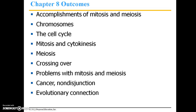What I hope to cover with this lecture includes accomplishments of mitosis and meiosis — so what are they useful for? I'm going to cover chromosomes, the cell cycle, mitosis and cytokinesis, which are part of the cell cycle but not the entire cell cycle, meiosis, crossing over, problems that can occur with mitosis and meiosis, which include cancer and non-disjunction, and we're going to conclude with an evolutionary connection.